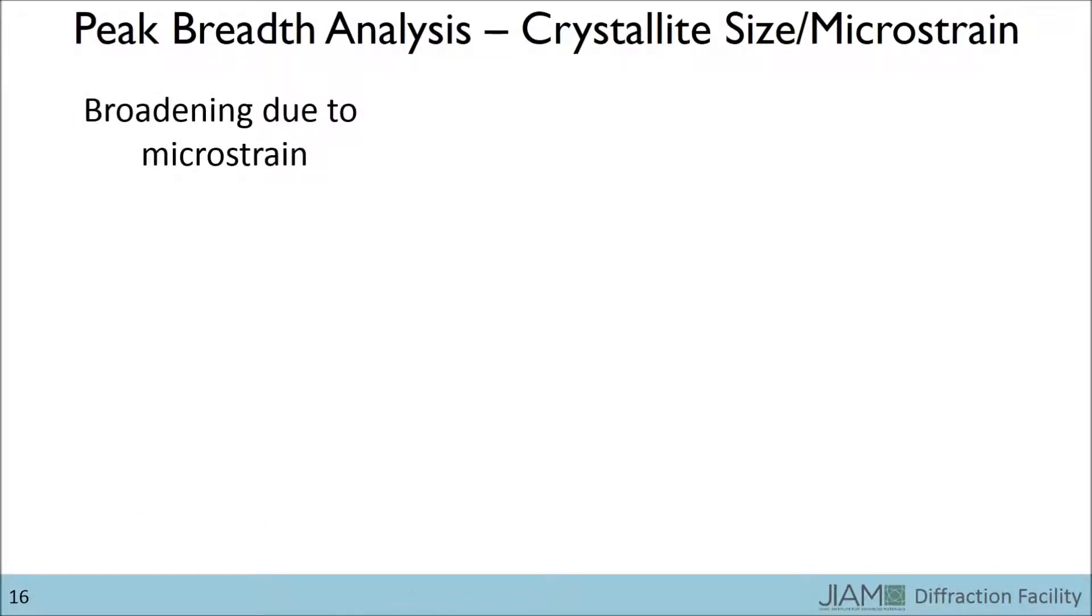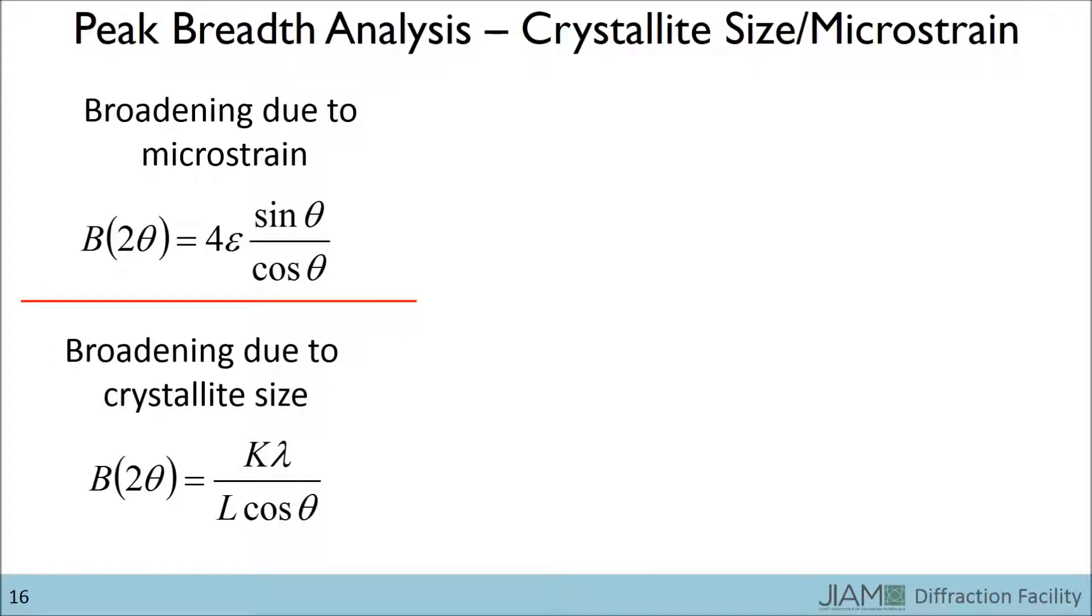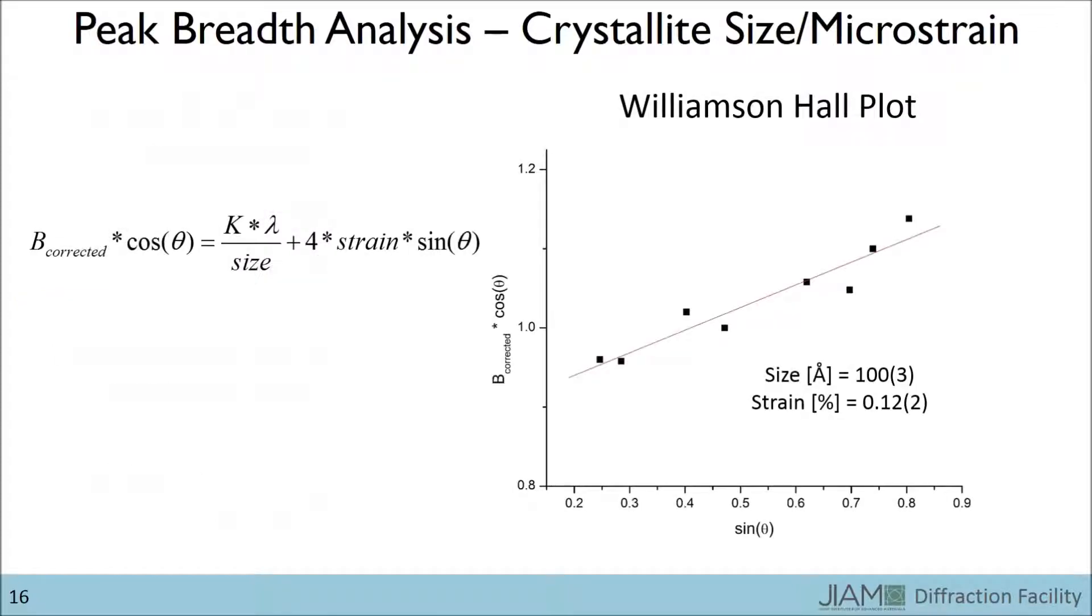Fortunately, there is an equation that also governs the effects of microstrain. The broadening is equal to 4 times the strain times the sine of θ divided by the cosine of θ. If we combine this with the broadening due to the crystallite size, we can make a Williamson-Hall plot. If we plot it so that the y-axis is the full width half maximum after having corrected for the instrumental broadening times the cosine of θ and put the sine of θ on the x-axis then fit the data with a straight line, the y-intercept gives the crystallite size and the slope gives the microstrain. For this sample, it was determined that the crystallite size is approximately 100 angstroms and the microstrain 0.12%.